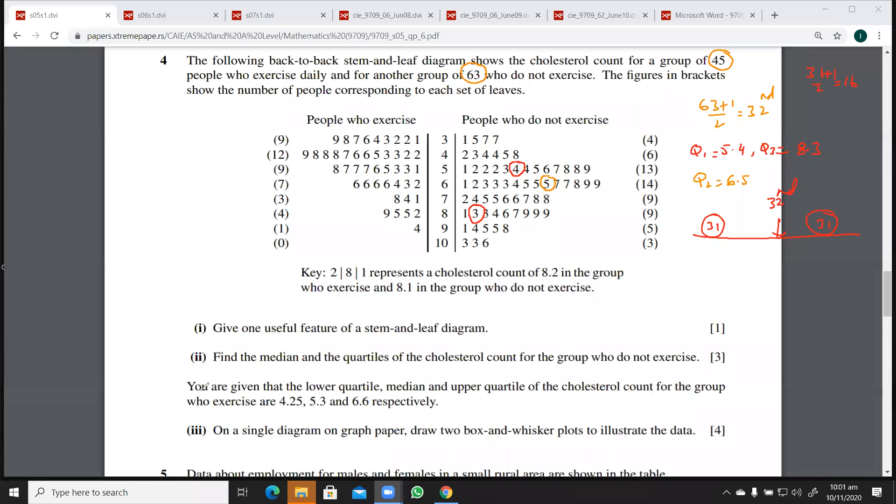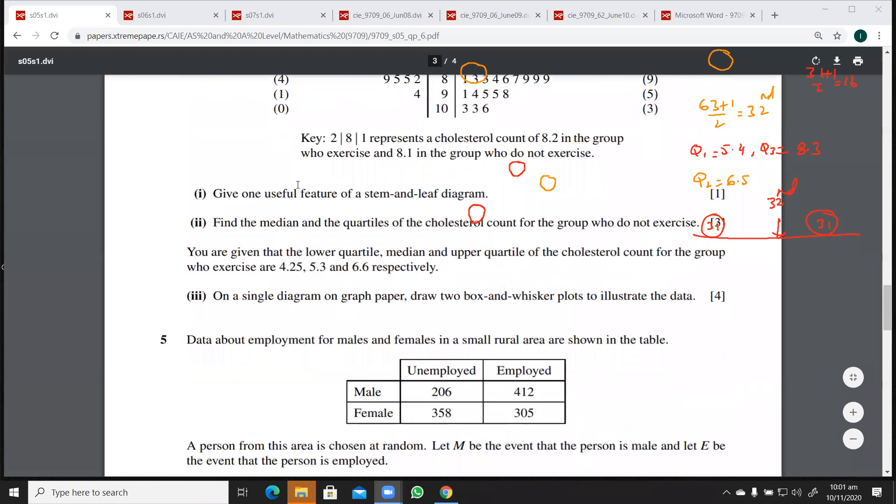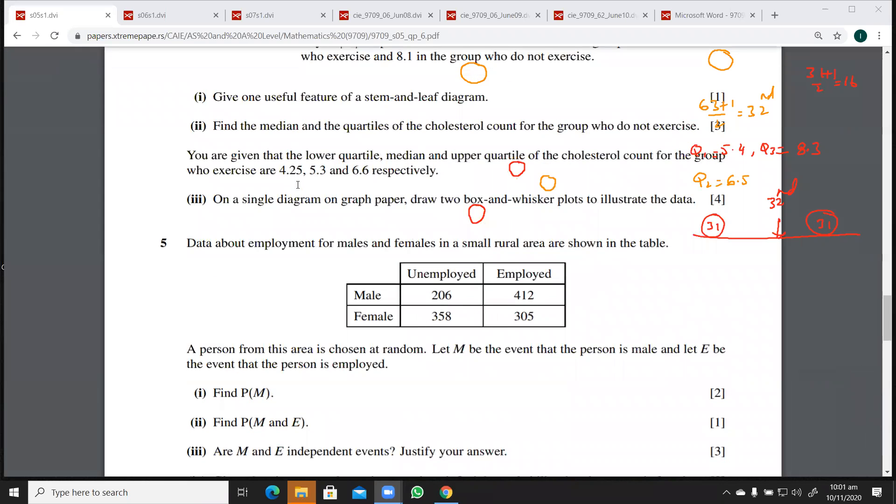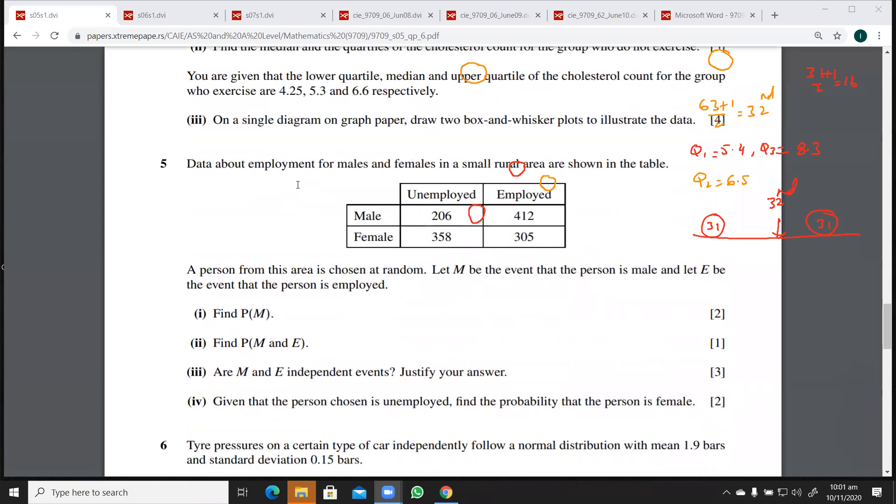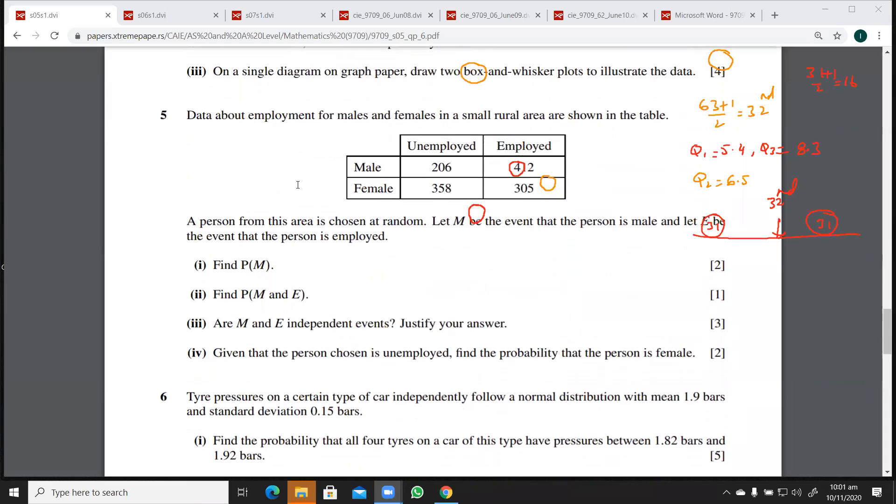Now we have been given all these like lower quartile, upper quartile and median for the people who exercise. And then in the third part, he says, we have to draw two box and whisker plots on the same graph paper. So I'm just going to slide this a bit up so that I can have some space here for this box and whisker plot.